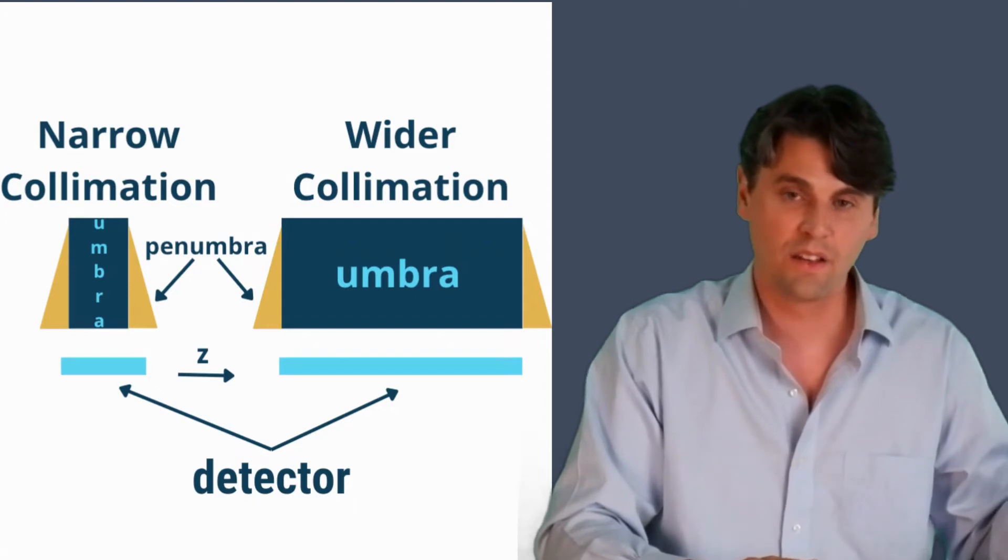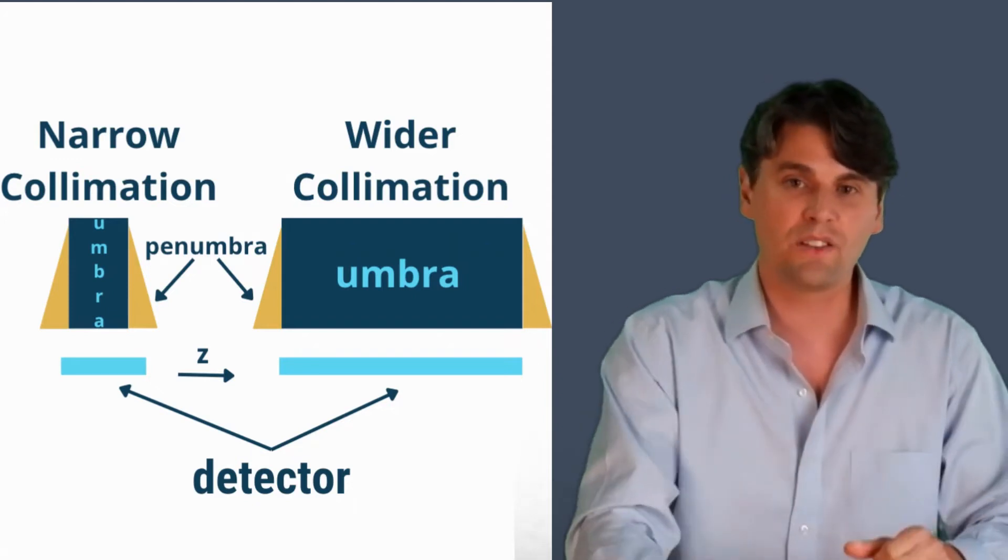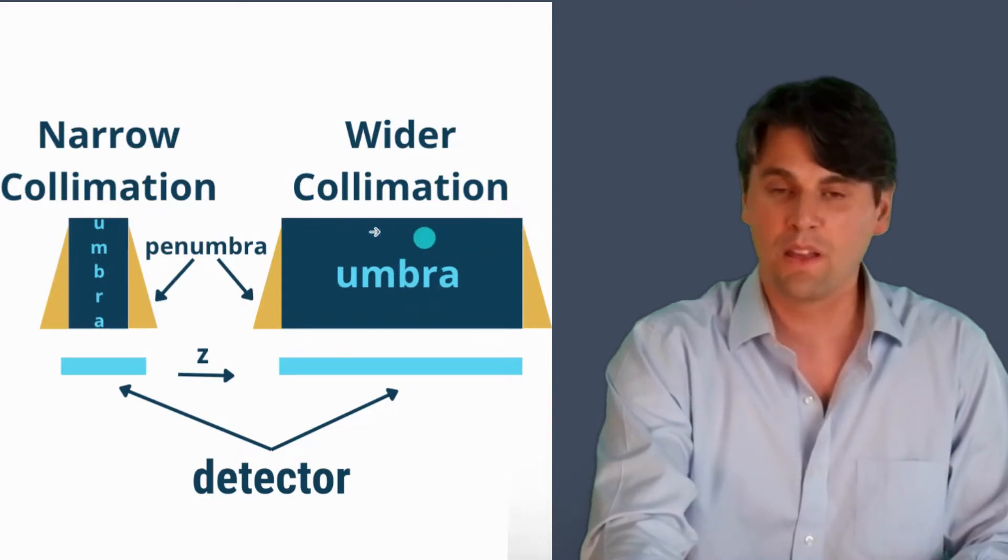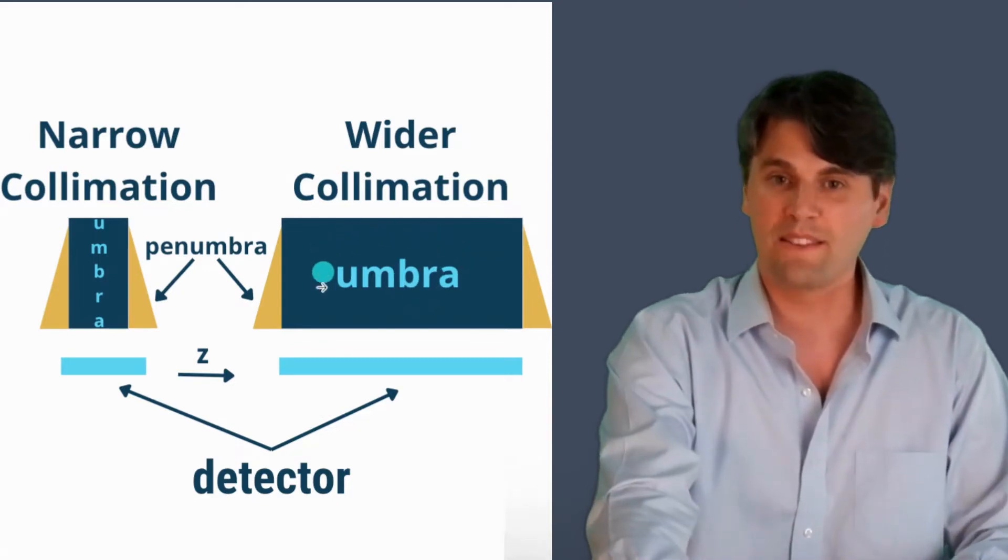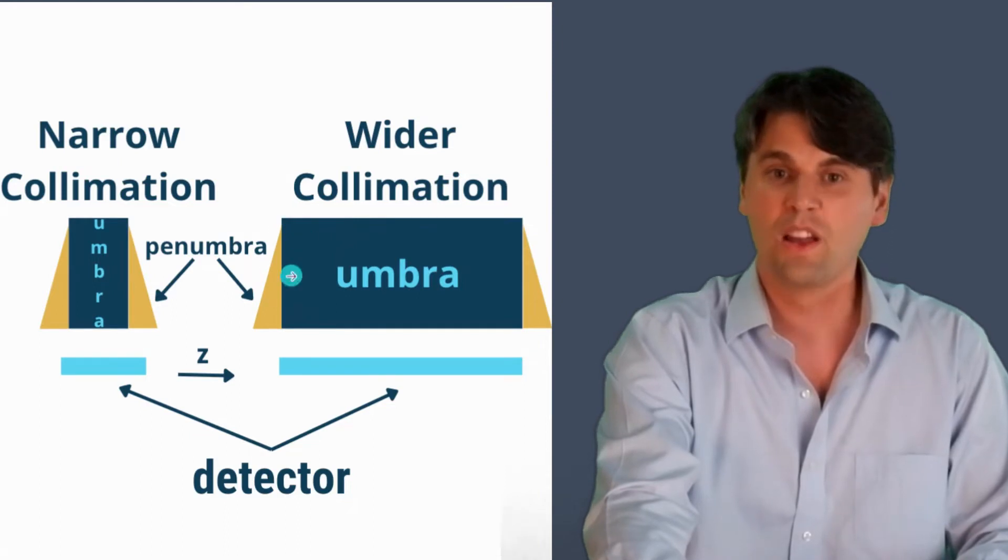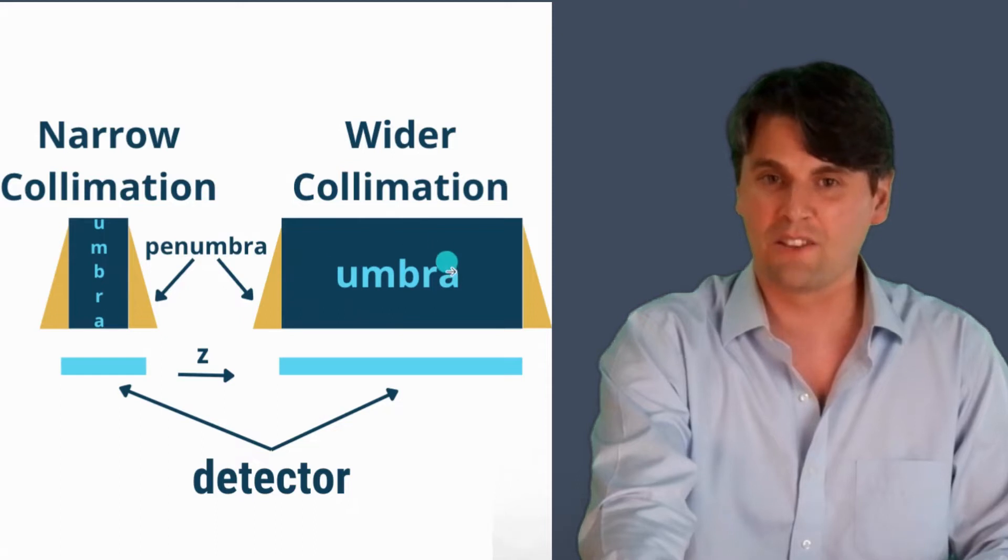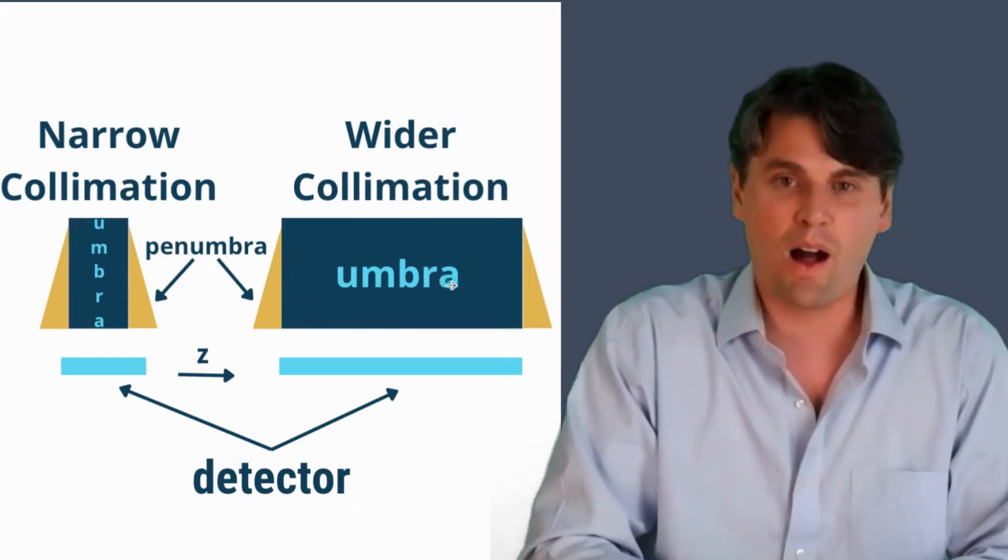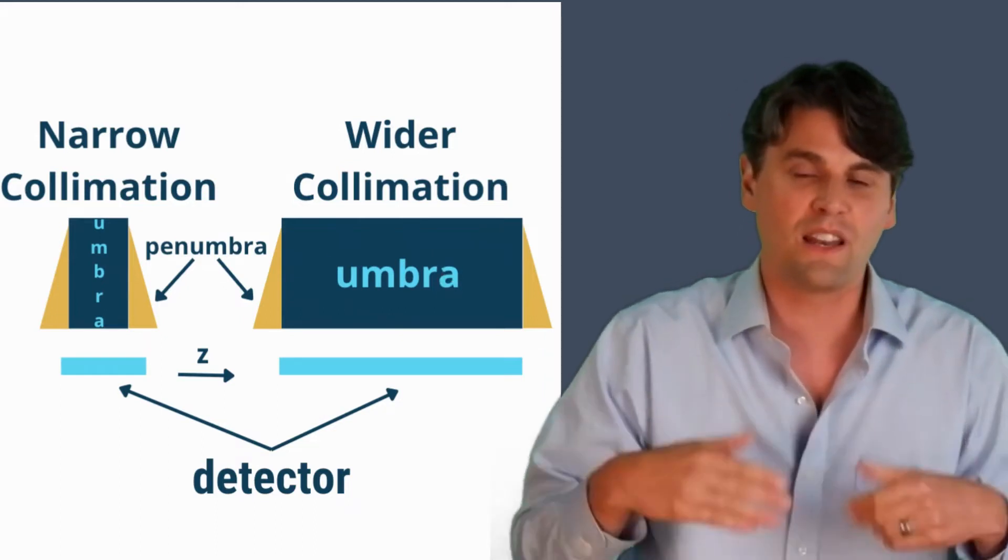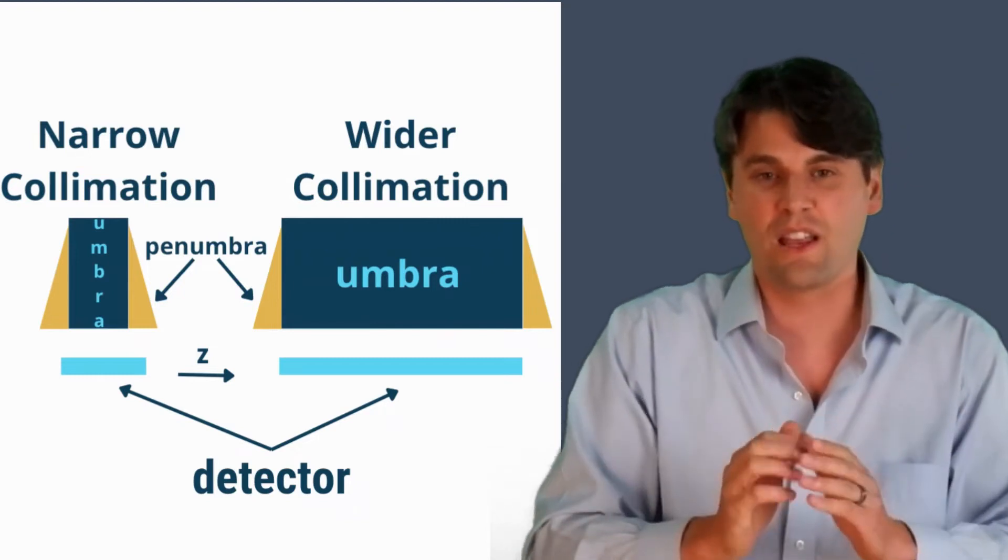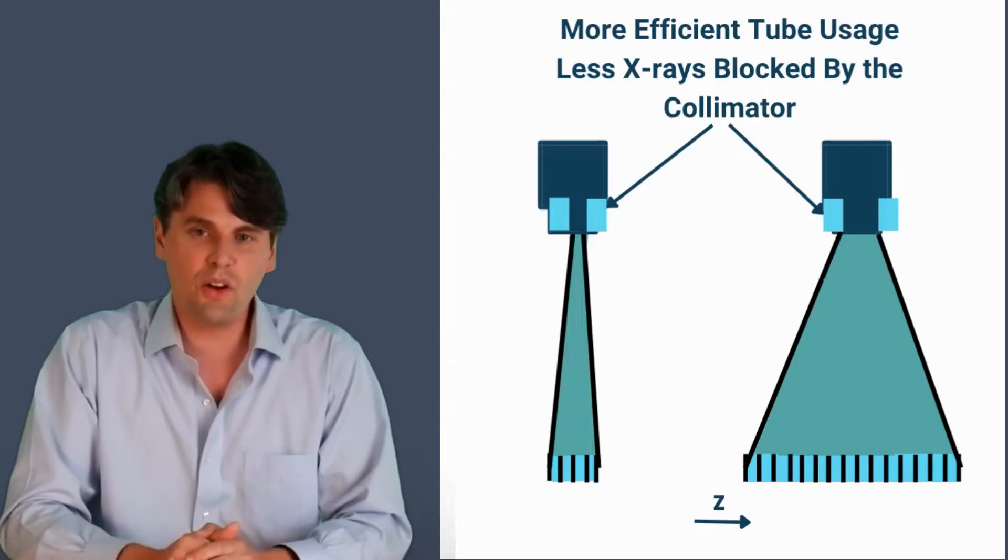So the wider collimation case is more efficient because every time you have this amount of wasted radiation in the penumbra, you're getting a much wider region of good radiation in the umbra. This is why the wider collimation has a higher what we call geometric efficiency than the very narrow collimations. There's also an efficiency gain from the standpoint of the tube heating.